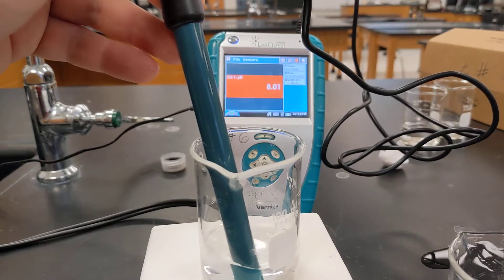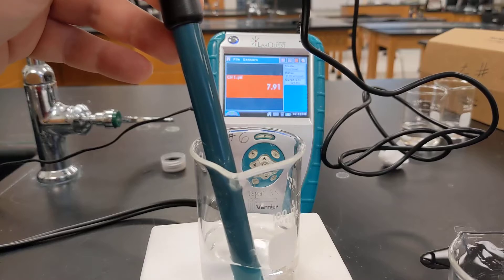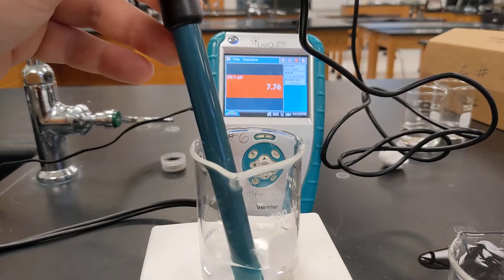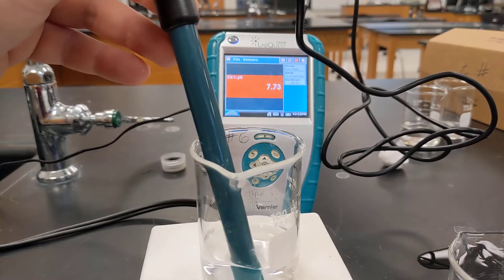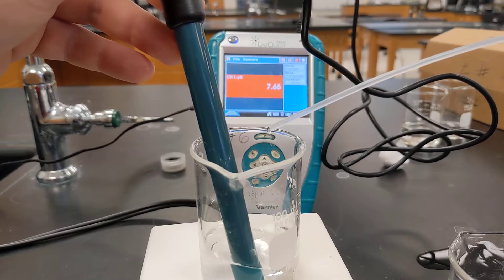For this demonstration, I'm going to show you the effects of adding a strong acid or base on a non-buffered and buffered solution. So first I have right here some distilled water and you can see what the pH is, and I'm going to add a single drop of hydrochloric acid.